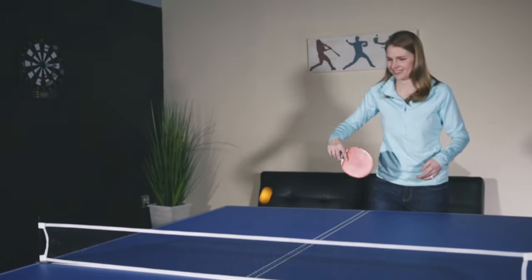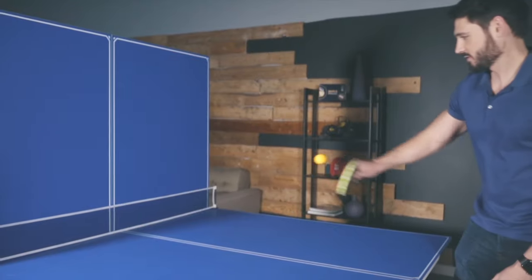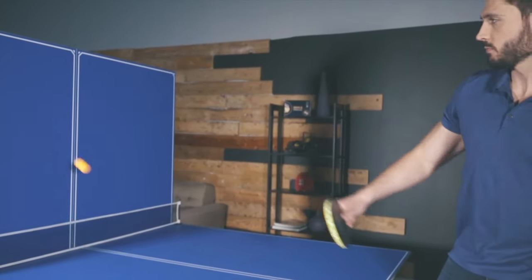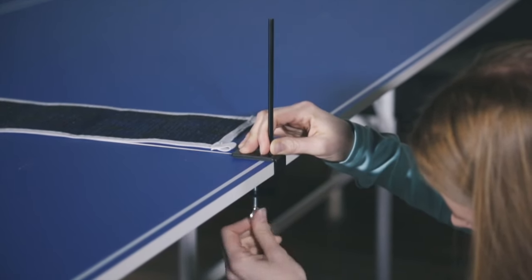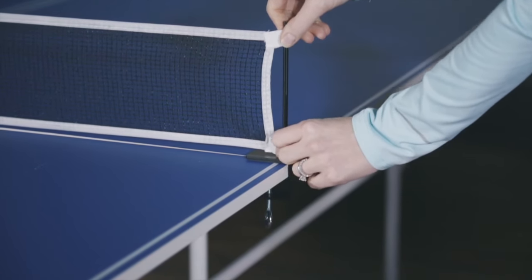The two independent table halves allow one side of the table to be folded for solo playback practice. The table also comes with a simple removable screw-on net set that is easy to use and assembles in seconds.